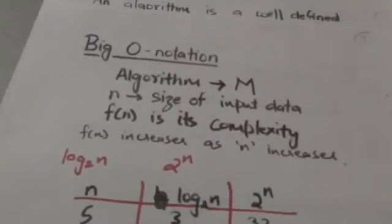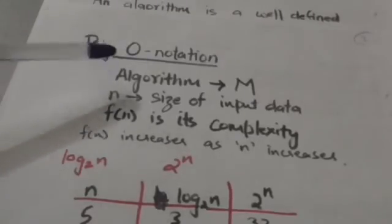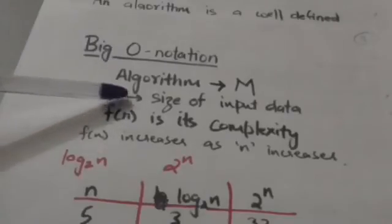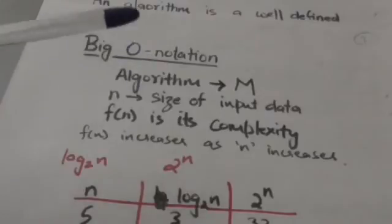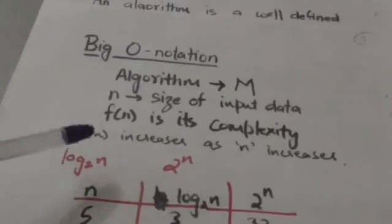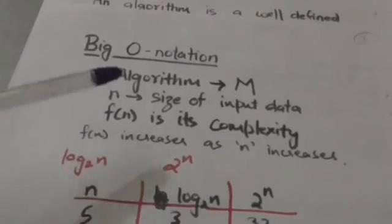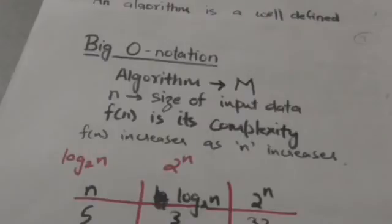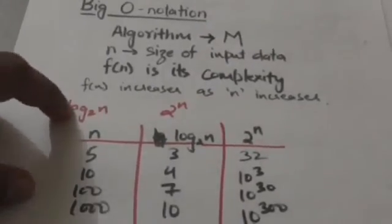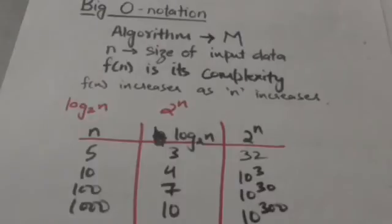Now we will study about big O notation. Suppose there is an algorithm M. N is the size of its input data and f(n) is its complexity. Clearly, complexity f(n) increases as n increases. Now see these two functions: log base 2 of n and 2 raised to power n.